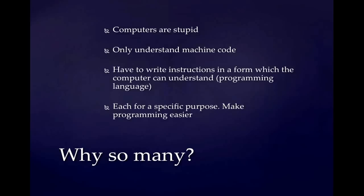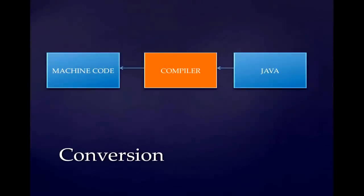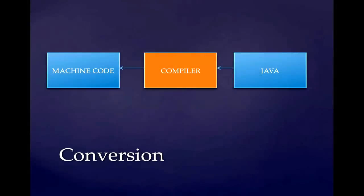If we look at the next slide — for example, if you've heard of Java, a general-purpose high-level programming language — you write Java code, which is shown on the right-hand side, the first box on the right. What happens with this code is that it goes through what is known as a compiler. This compiler takes every single line of code that you've written in Java, does its magic, and converts it into machine code that the computer can understand and execute.